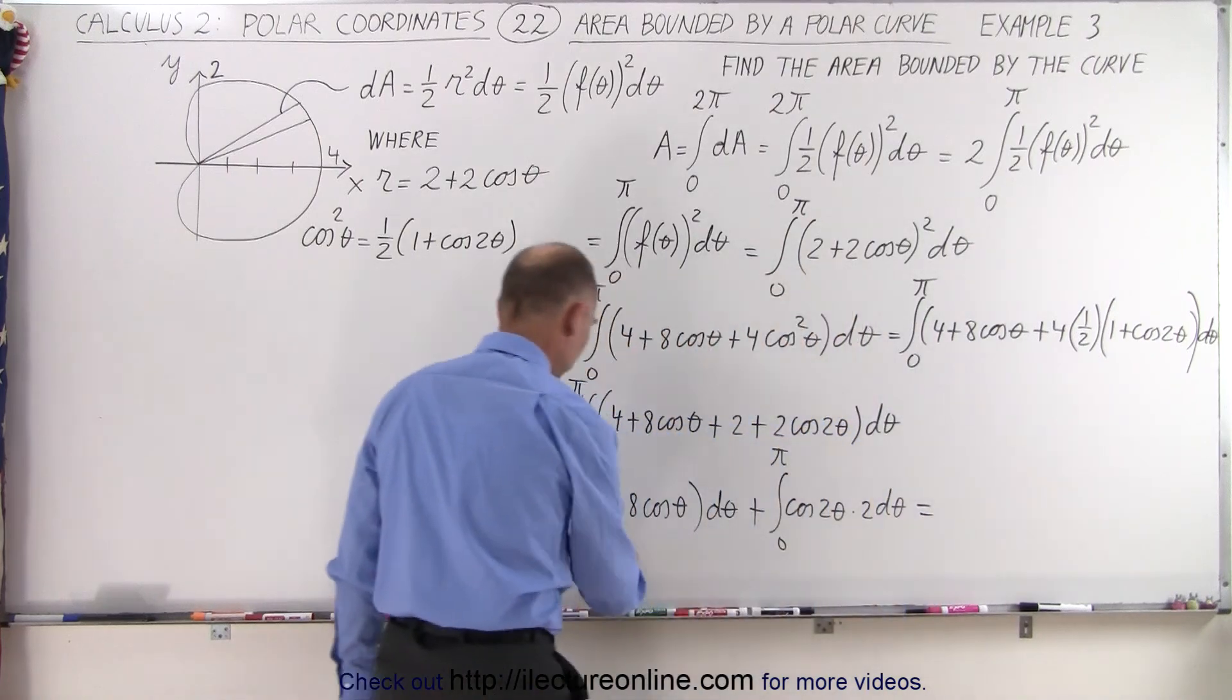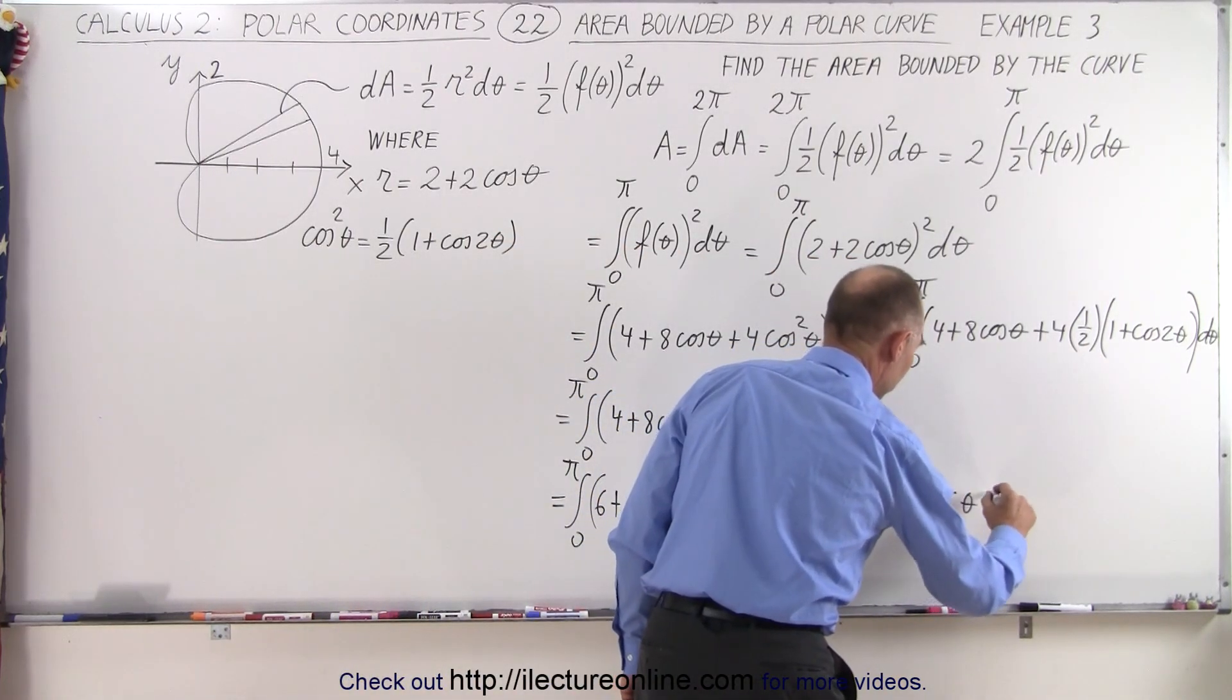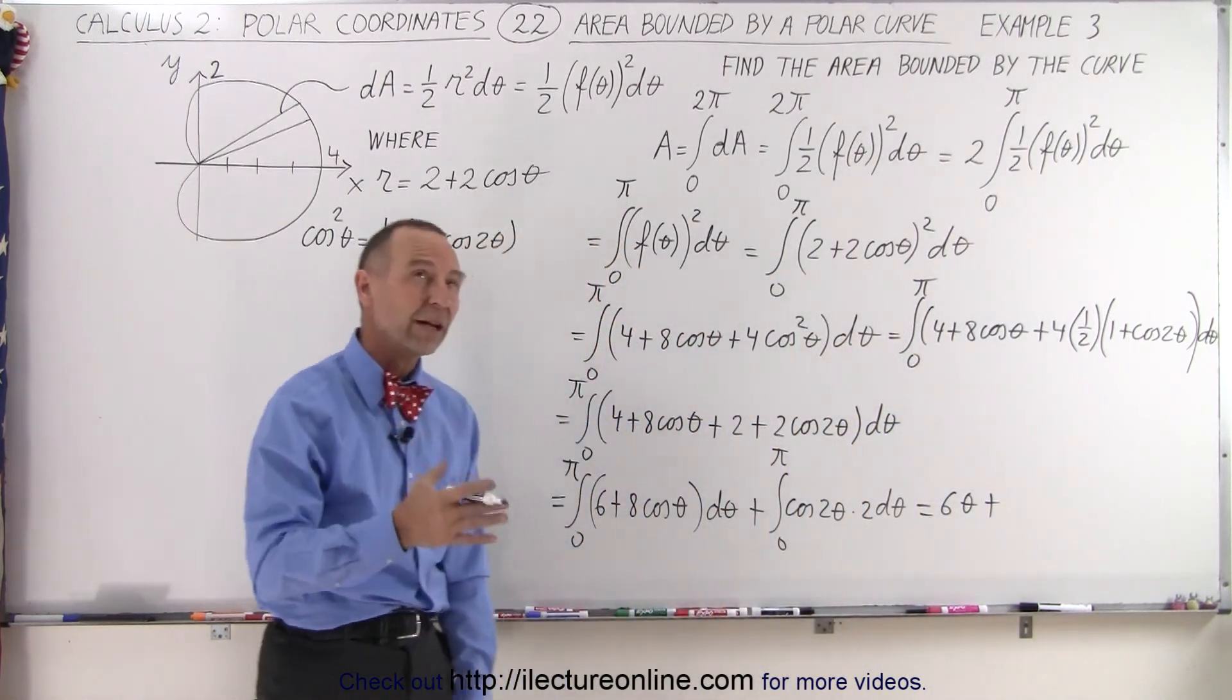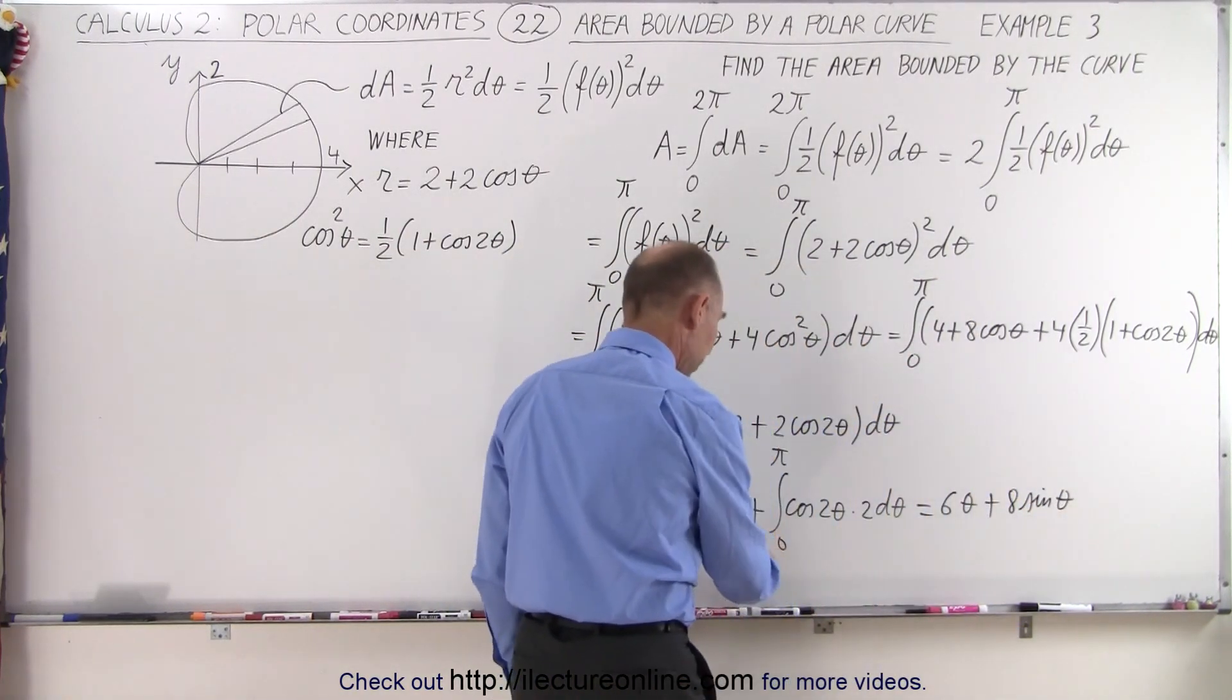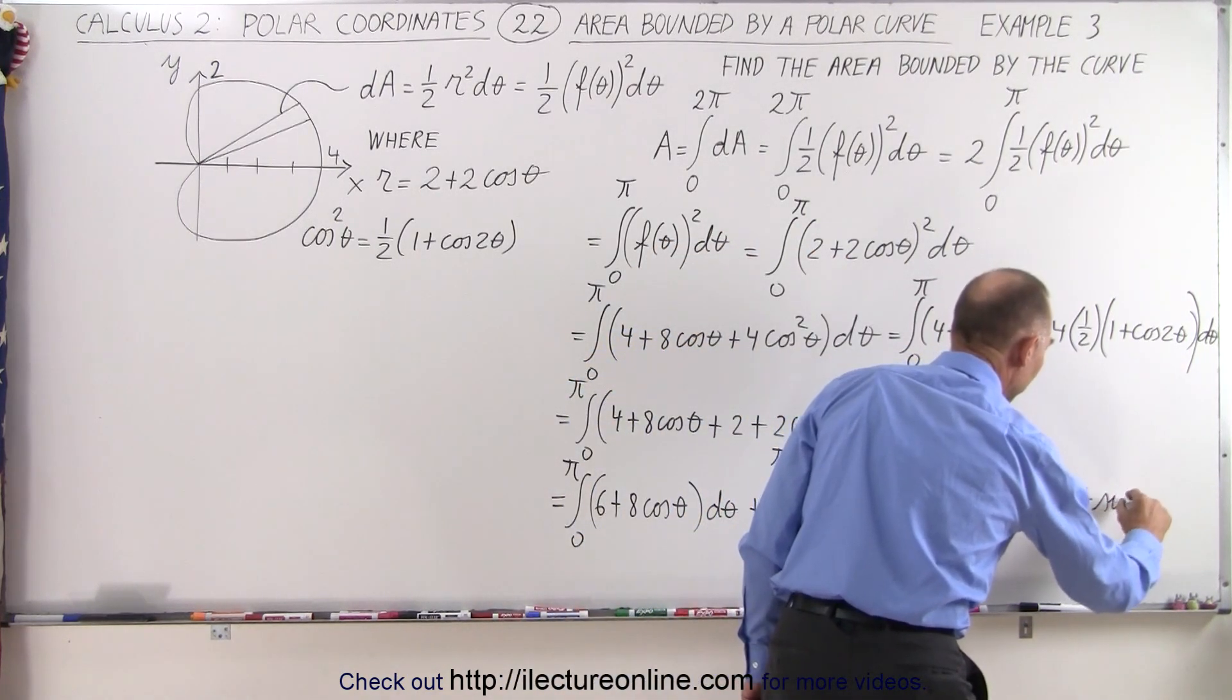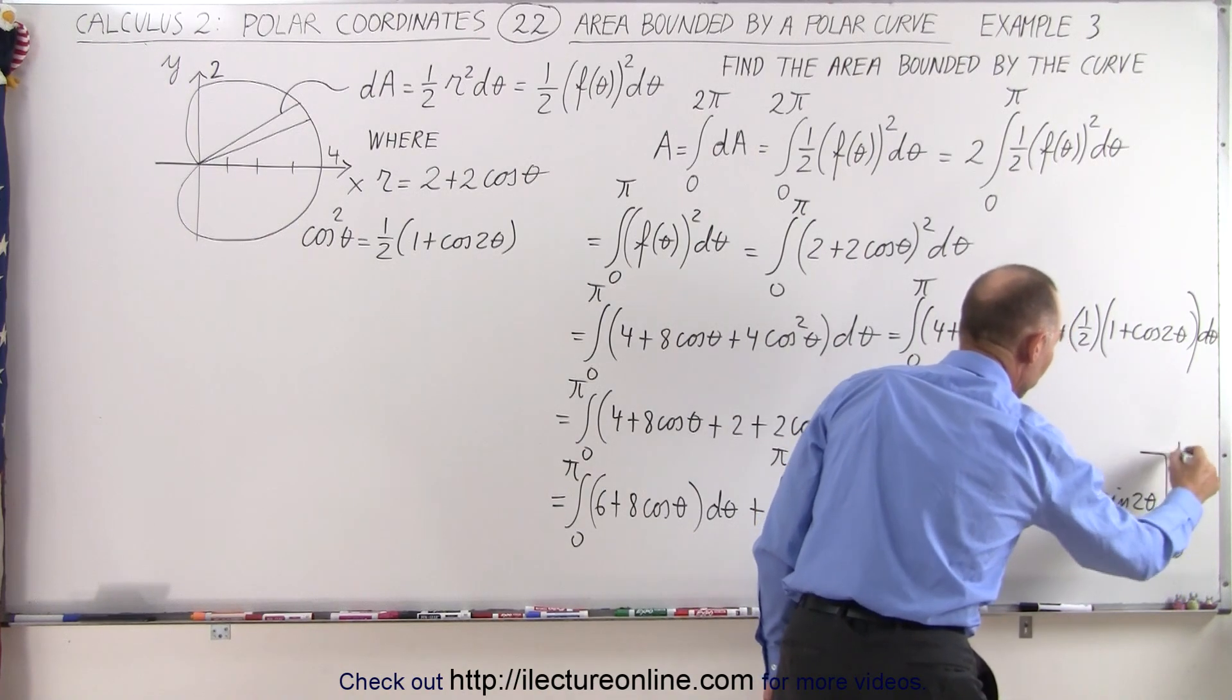So this is equal to the integral of 6 d theta is simply 6 times theta plus 8 times the cosine of theta. The derivative of the sine is the cosine, so the integral of the cosine is the sine. So this would be 8 times the sine of theta. And then plus the sine of 2 theta, all evaluated from 0 to pi.